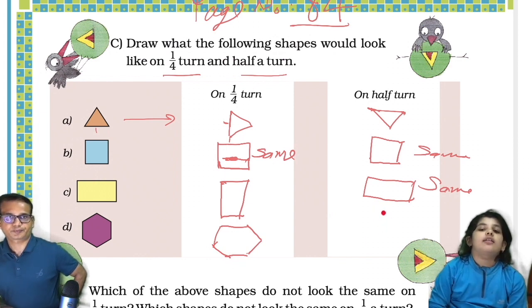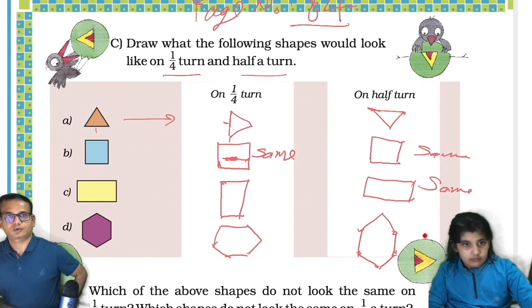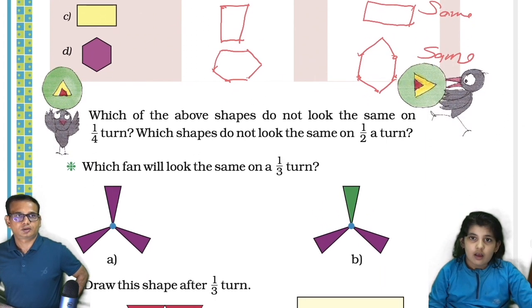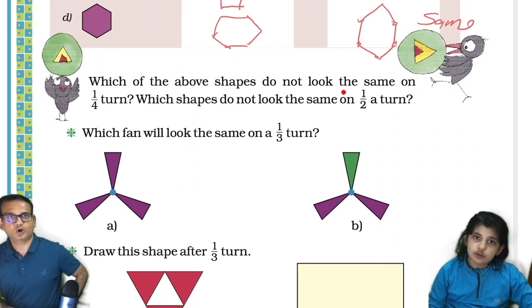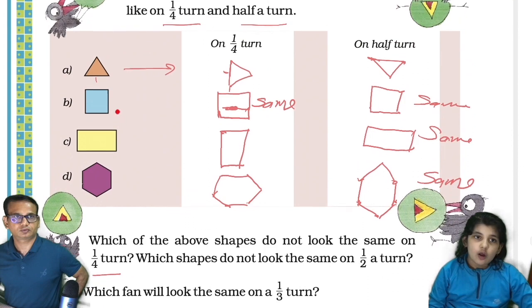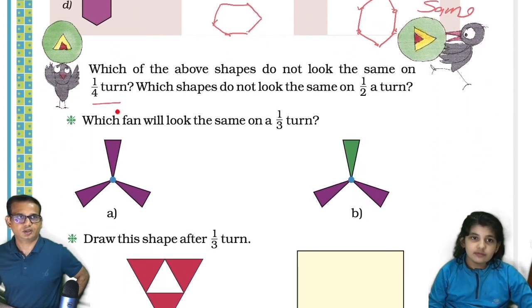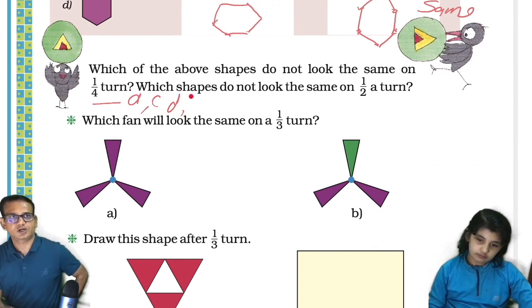Now, which of the above shapes do not look the same on a quarter turn? A, C, and D. A, C, and D — which shapes do not look the same?